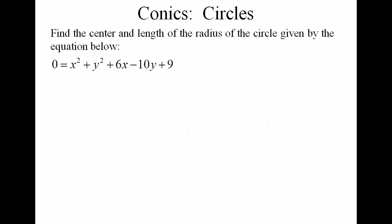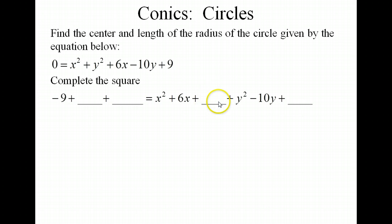Okay. Let's find the center and length of the radius of a circle given below. Notice that this is not in the format that we need to identify the center of the circle or the radius length. So what we have to do is complete the square. So we're going to group together our x terms and our y terms. And what we want to do then is find a number that we're going to put in this blank that makes these three terms a perfect square so that we can factor them. And then we're going to do the same thing with the y values. Notice I also brought this 9 over to the other side here. And, of course, whatever I put into this blank on the right side, I have to put it into the blanks on the left side to balance the equation.